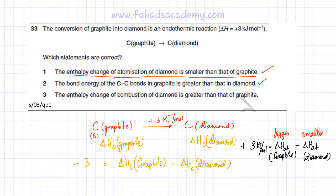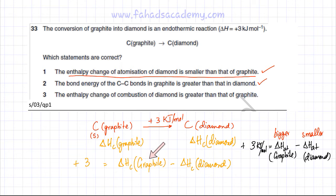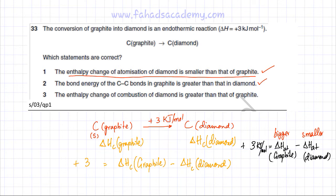Using the Hess Law formula — the enthalpy of a reaction equals the enthalpy of combustion of reactants minus the enthalpy of combustion of products — and we are still getting a positive value, which at first glance suggests the enthalpy of combustion of graphite would be the bigger value and the enthalpy of combustion of diamond would be the smaller value.